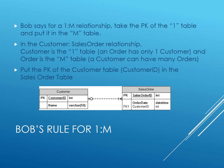Bob's Rule for one-to-many says to put the primary key of the one table in the many table. A customer has many sales orders, so sales orders is the many table. Each sales order has only one customer, so customer is the one table. Using Bob's Rule, place the primary key of the one table — customer ID — into the many table, sales order.